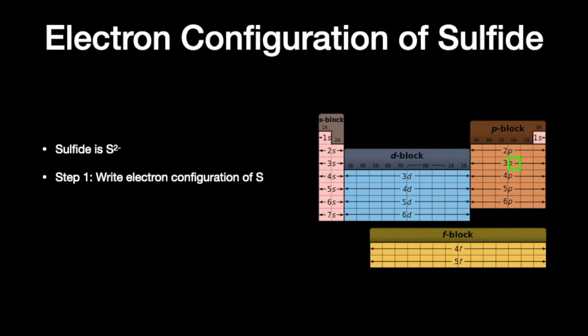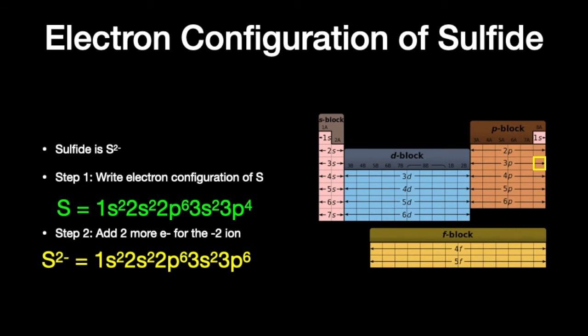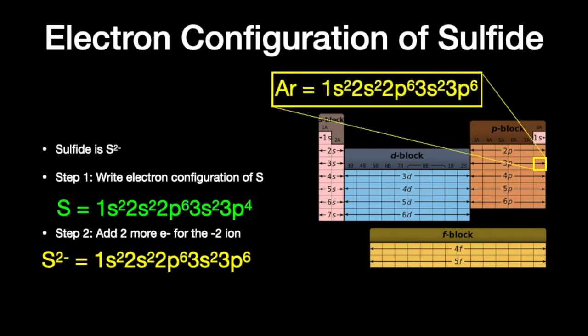Sulfide is an ion formed from sulfur in group 6 of the periodic table. Our first step is to write out the electron configuration for sulfur — it has a partially filled 3p subshell. We need to add two more electrons to create the minus 2 ion, changing 3p4 to 3p6. Argon has this exact same electron configuration, so we say sulfide has a noble gas configuration.